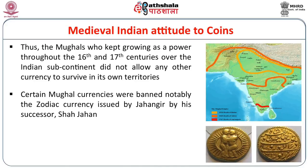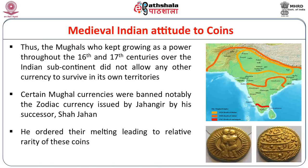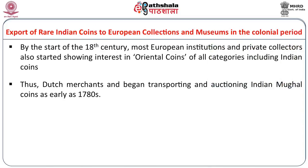Certain Mughal currencies were also banned after the lifetime of the emperor. One notable example is the zodiac currency of Jahangir. These were banned by his son and successor Shah Jahan because they were deemed un-Islamic by Islamic scholars. Hence he ordered the melting of these very beautiful and rare coins, which are therefore found in very small numbers today. This shows a very big negligence on the part of Indian rulers, simply because they didn't understand the value of older coins as objects of historic value.